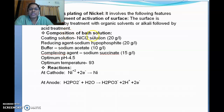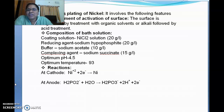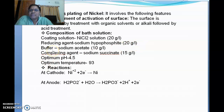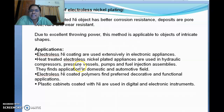The composition of the bath solution must be carefully followed. The coating solution for nickel is nickel fluoride solution. Just like following a recipe, we must use precise compositions for accurate results. A reducing agent, sodium hypophosphite, is used along with a buffer, a complexing agent such as sodium succinate. The pH should be maintained at 4.5 and the temperature at 93°C.